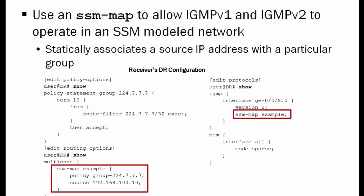We then see on the right side that this source-specific multicast map is applied to the interface under protocols IGMP. You also see that IGMP version 2 is configured on that same interface, because the user's PC is not able to support version 3.